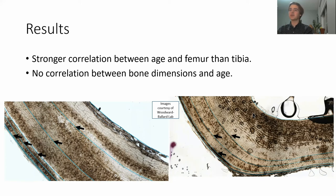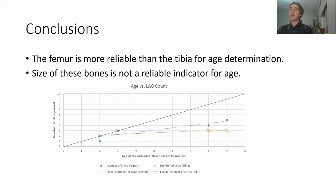Additionally, there was no correlation between the dimensions of the bones and the age of the individual. All of this information shows that counting the number of lines of arrested growth in the femur is more reliable than the tibia for establishing a more precise minimum age for female Rocky Mountain Elk. This project has also shown that dimensions of the bones is not always a good indicator for age of an individual.